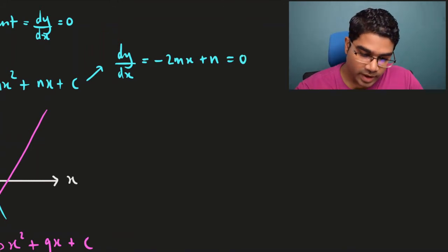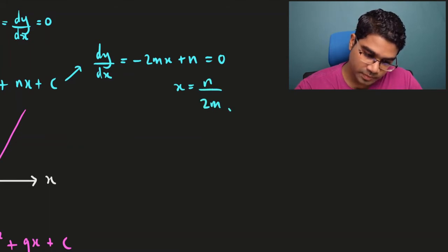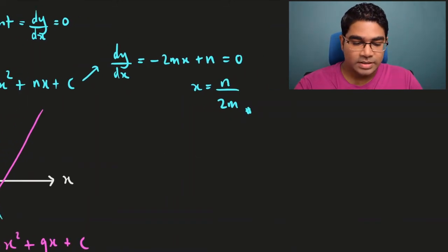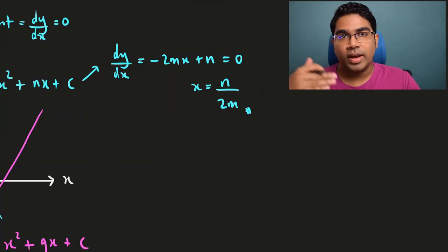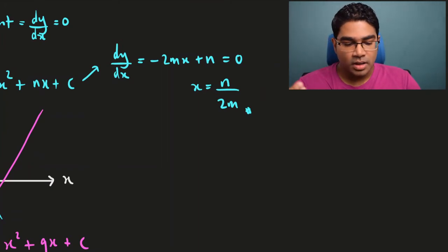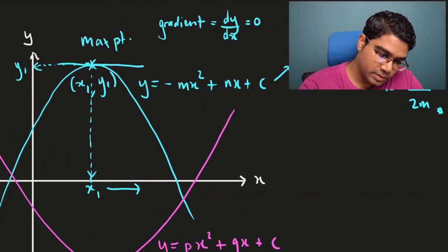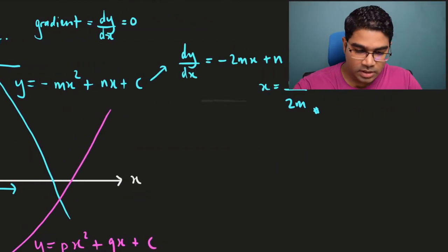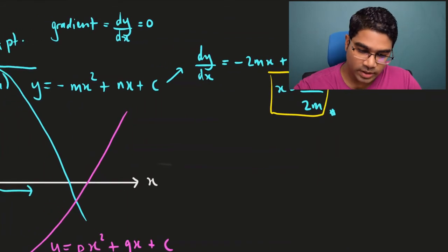dy/dx equals negative 2mx plus n, and because this is the maximum point we know the gradient is 0, so dy/dx equals 0. From this we can solve for x: x equals n over 2m. This is the value of x at the maximum point when y is maximum — this value of x is actually x1.